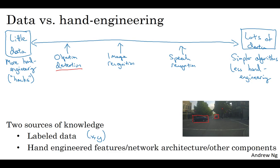There are lots of ways to hand engineer a system. It can be from carefully hand designing the features, to carefully hand designing the network architectures, to maybe other components of your system. And so, when you don't have much labeled data, you just have to count more on hand engineering.